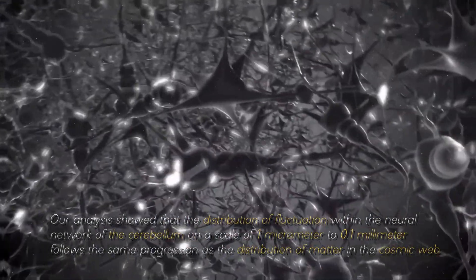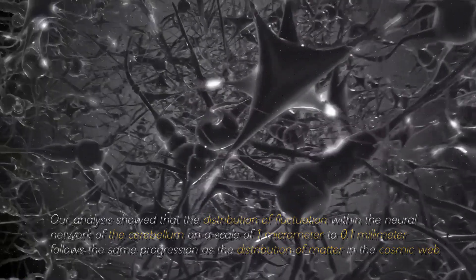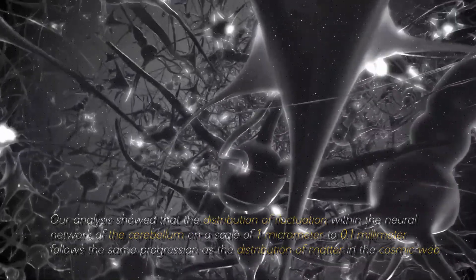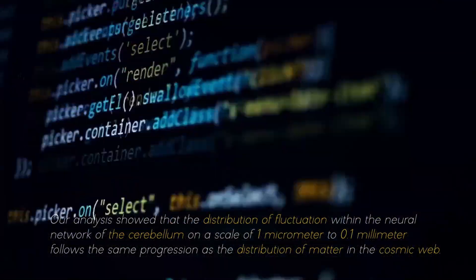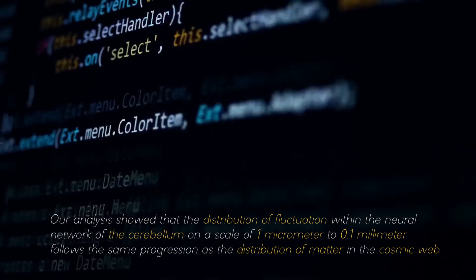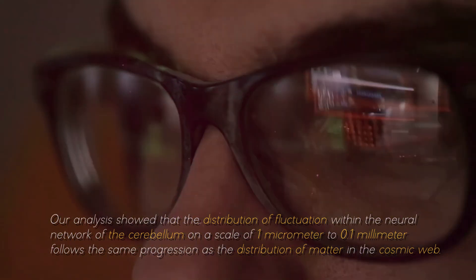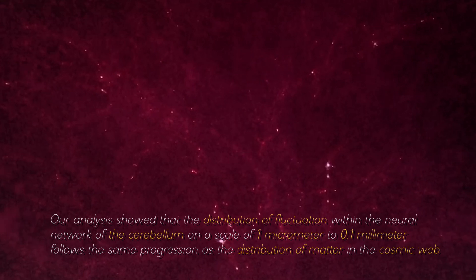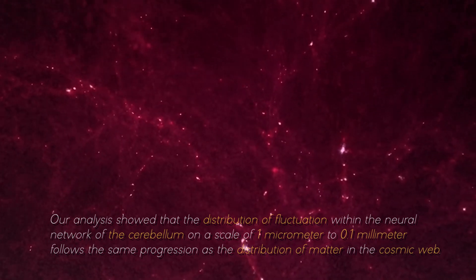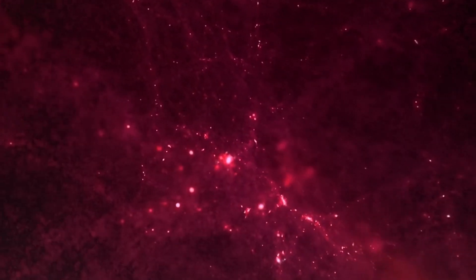Our analysis showed that the distribution of fluctuation within the neutral network of the cerebellium on a scale of 1 micrometer to 0.1 millimeters follows the same progression as the distribution of matter in the cosmic web, commented one of the researchers in charge of this project.